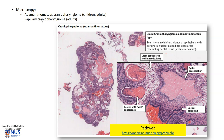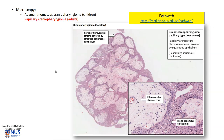Let's take a look at the other variant, which is the papillary craniopharyngioma. This tumor simply shows a papillary architecture with fibrovascular cores. You can see here the fibrous stroma, and these are covered by benign stratified squamous epithelium. So it resembles a squamous papilloma, which is a benign tumor.